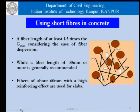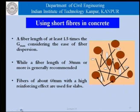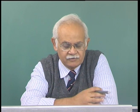A fiber length of 30 mm or more is generally recommended — addressing the fact that for much concrete construction the maximum aggregate size is around 20 mm. So 30 mm is a ballpark number for normal concrete construction. Fibers of about 60 mm length with higher reinforcing effect are used in slabs. The reinforcing effect essentially depends on the length of the fiber.